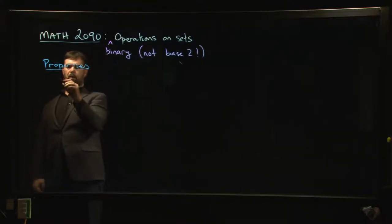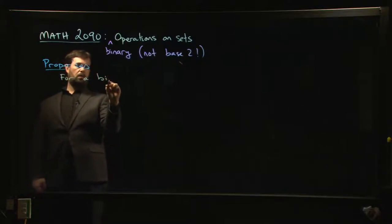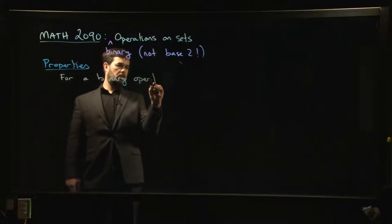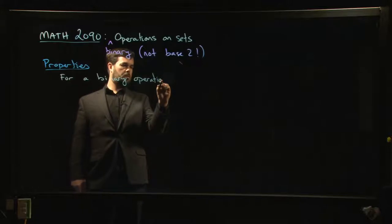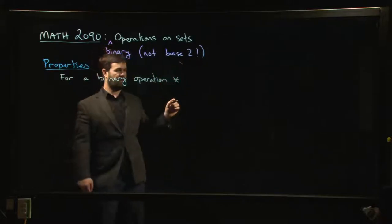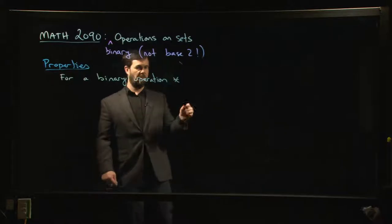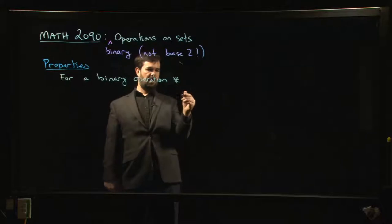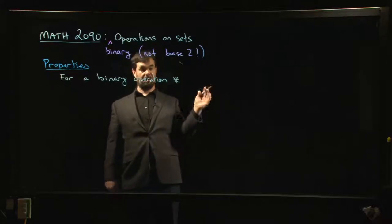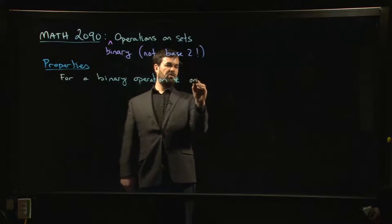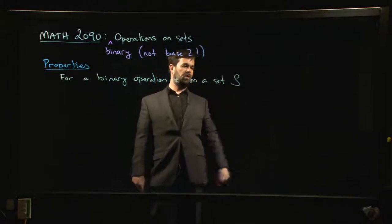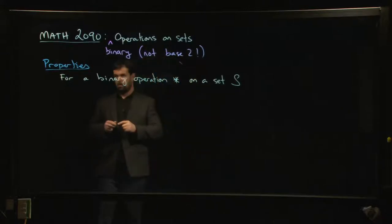We're going to look at properties for a binary operation — we'll call it 'star' so we don't have to commit ourselves to either addition or multiplication or any particular example. It's a binary operation star on a set S — S is a good letter for set.